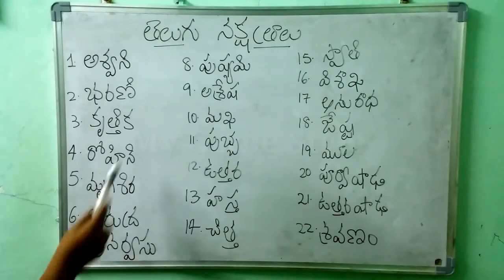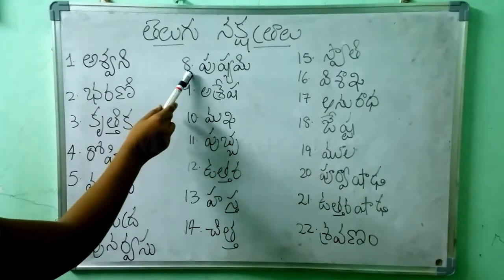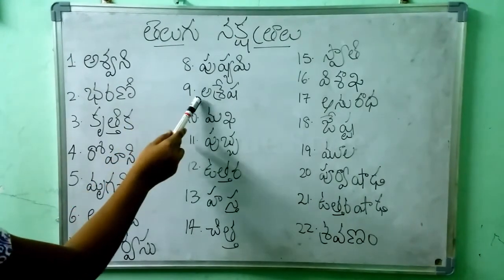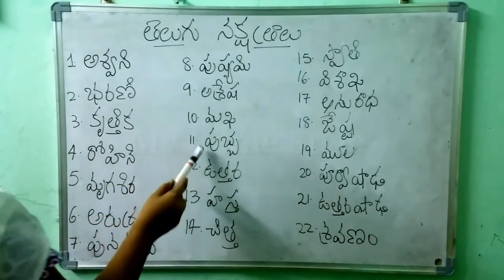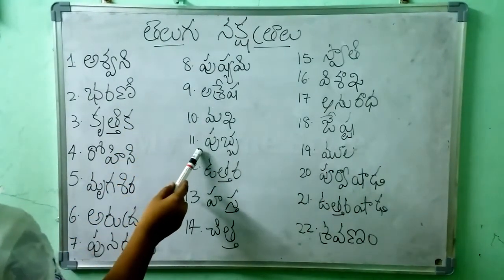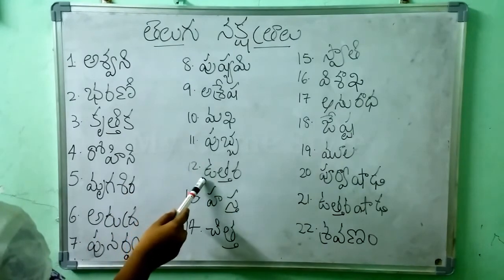Punarvasu, Pushyami, Aslesha, Makha, Pubba, Uttara,